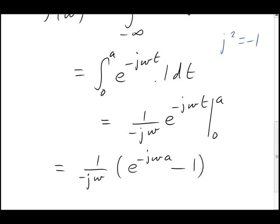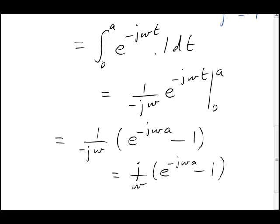That's pretty much it, really. There's one minor simplification we might make, and that's to recognize that 1 over negative j is the same as positive j on top.